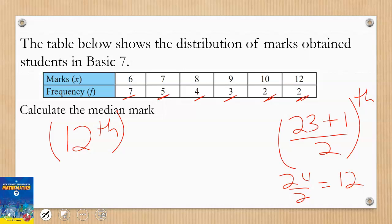That's why I added 1. If I had gotten the answer to be even, like 22, I'll just divide by 2 and that will give me the position as 11th position. Then I search for it. Now that I have my position, how am I going to use it to get my median mark?